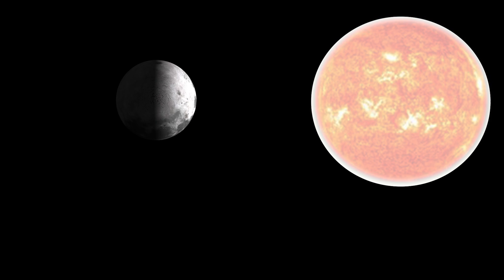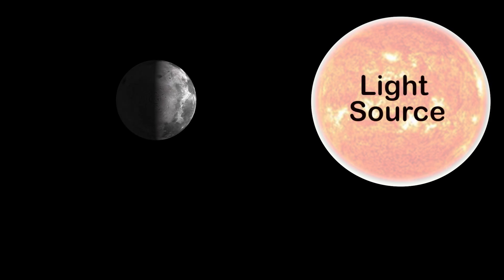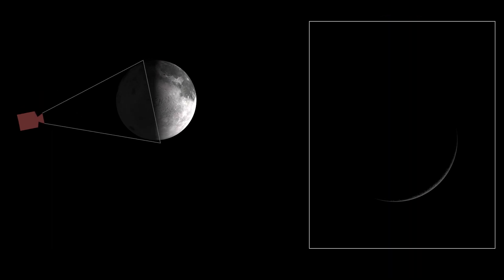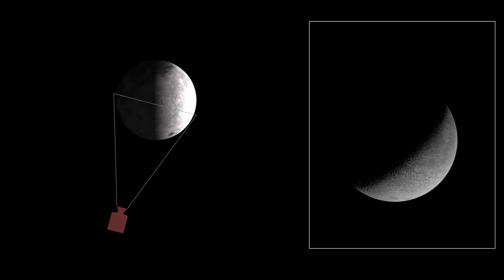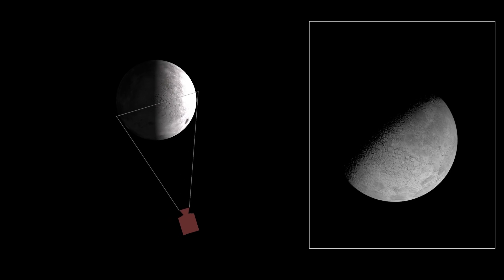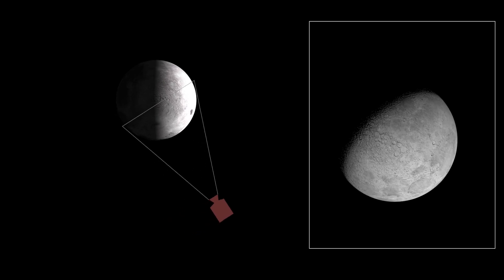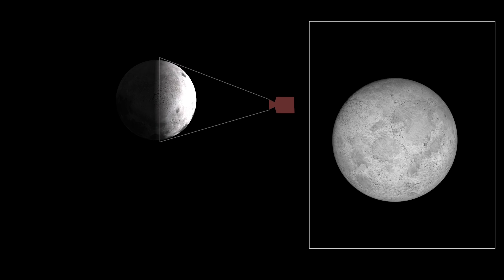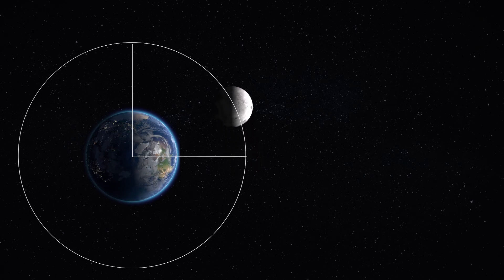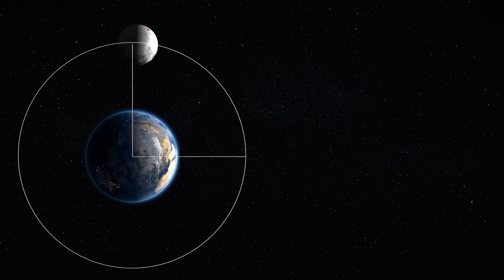To understand further about this crescent shape, consider a sphere which is lighted up on its one half and see what happens when we view it from different angles. See how the lighted-up area changes when we change our viewing angles — this is how the crescent shape is formed.